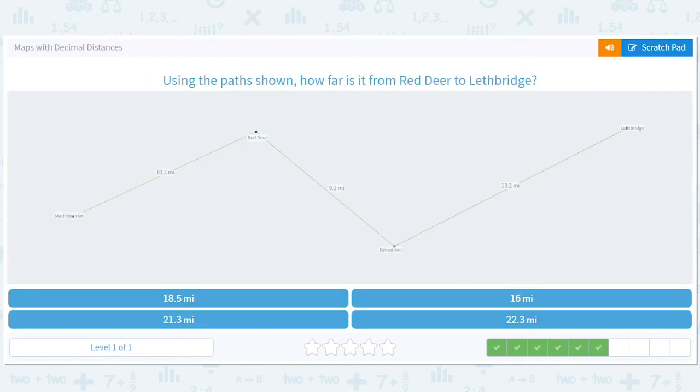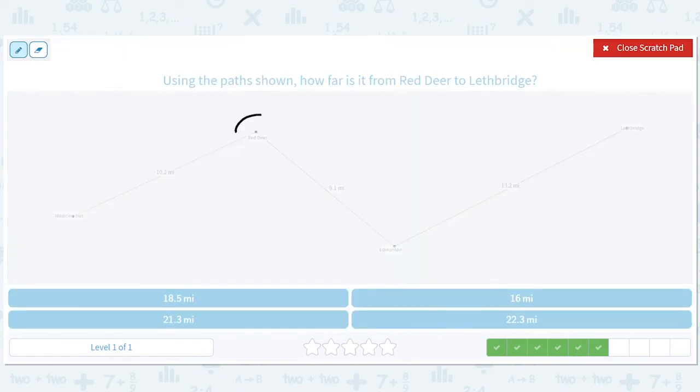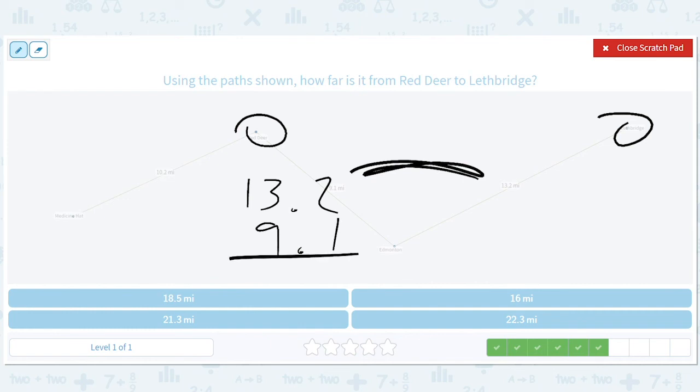How far is it from Red Deer to Lethbridge? They changed it up a little bit. Red Deer to Lethbridge. So we're going to add these two numbers up. 13.2 plus 9.1. That's going to be 22.3.